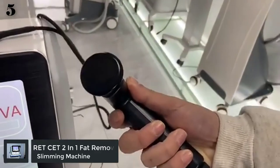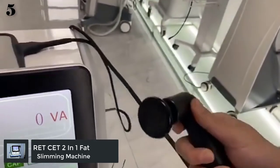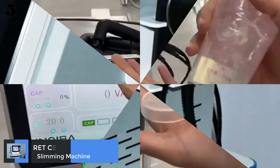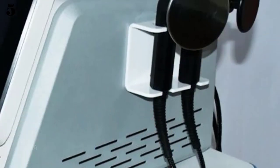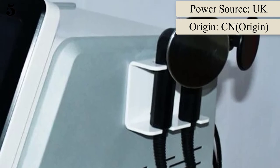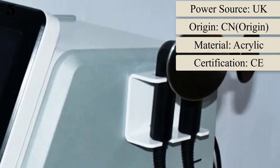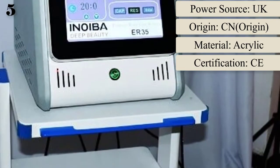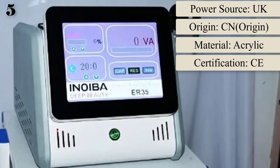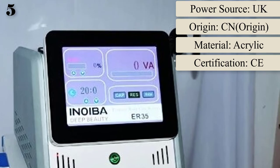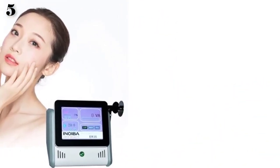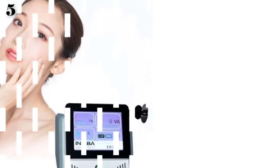Number 5: Spade Nindibar Red CET 2-in-1 Fat Removal Fat Dissolving Proionic System High Frequency Heating Diathermy Treatment. Origin: CN. Material: Acrylic. Function: Skin Tightening. Power Source: Dry Battery. Power Source: US, EU, UK, AU. Standard Voltage: 110V, 220V. Certification: CE.